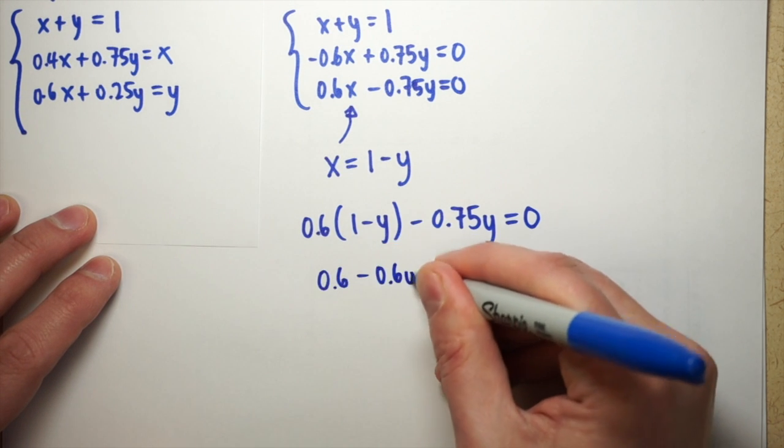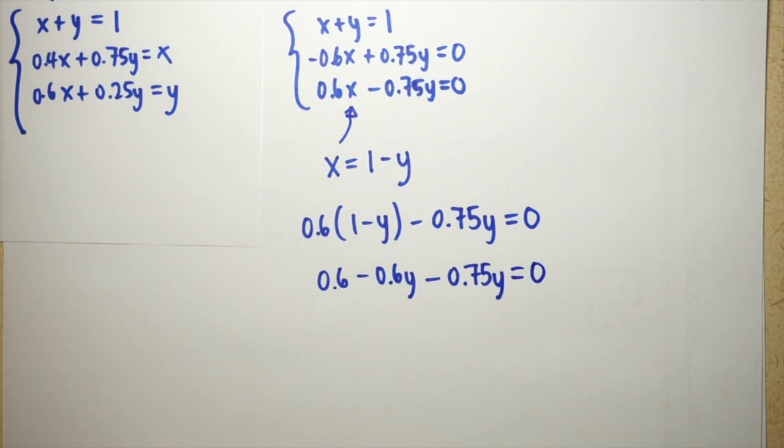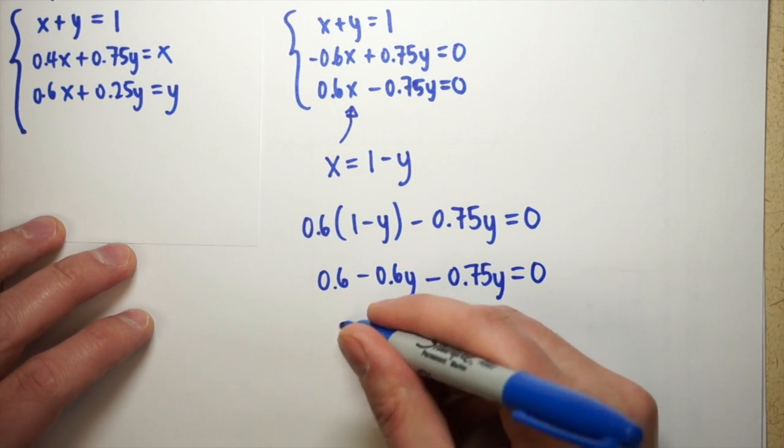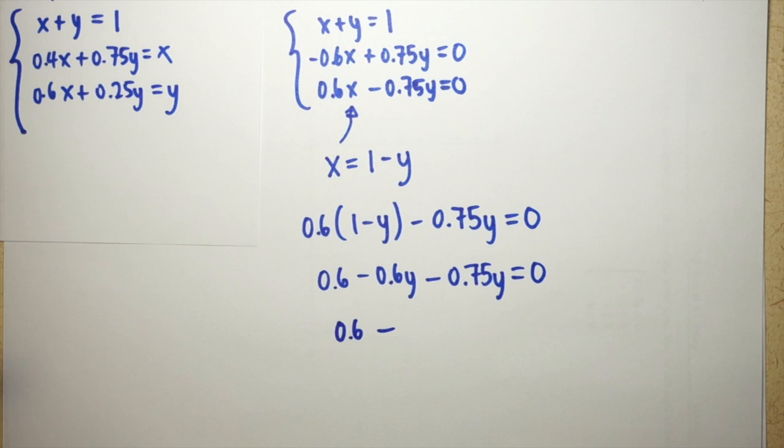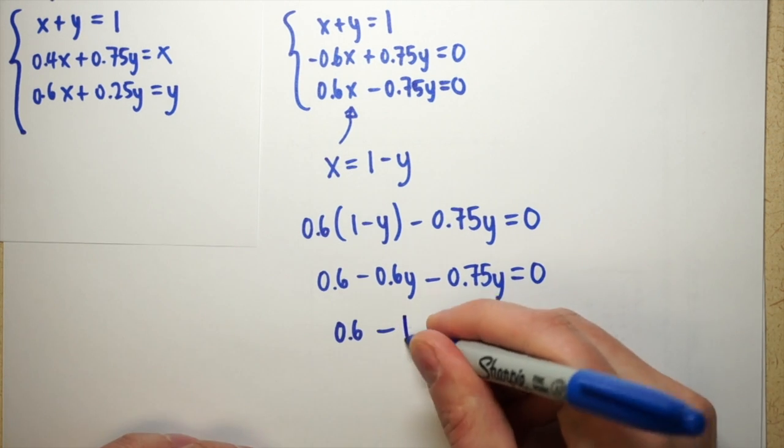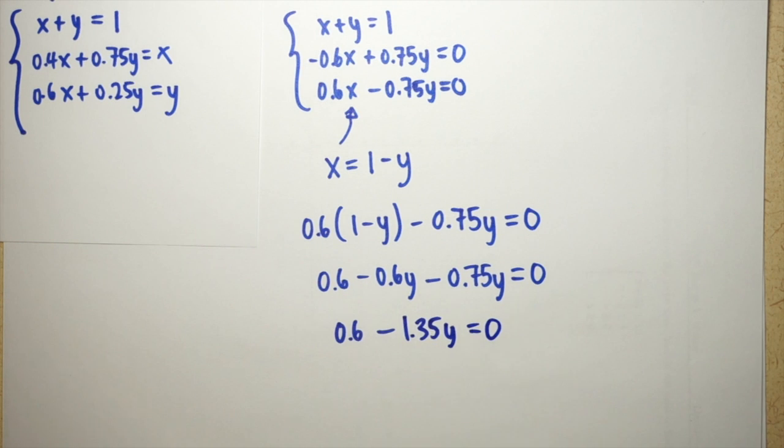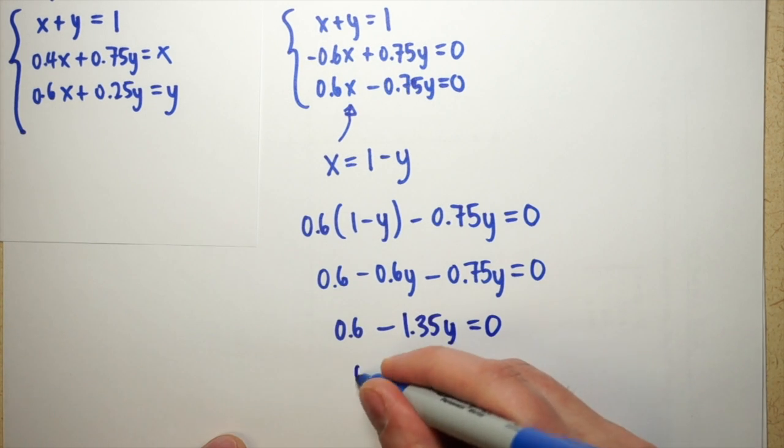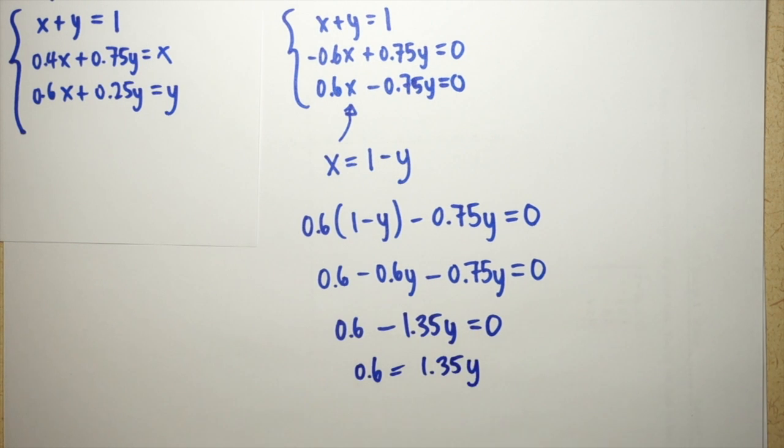As I continue doing the algebra to end up with our solution, notice that we had three equations to start with, but only two variables. These types of systems are called over-determined because they have too many equations for the number of variables there are. But luckily, when we're working with stochastic matrices like this, the last two equations, or the last however many equations we're working with because of the size of the matrix, will end up not mattering.